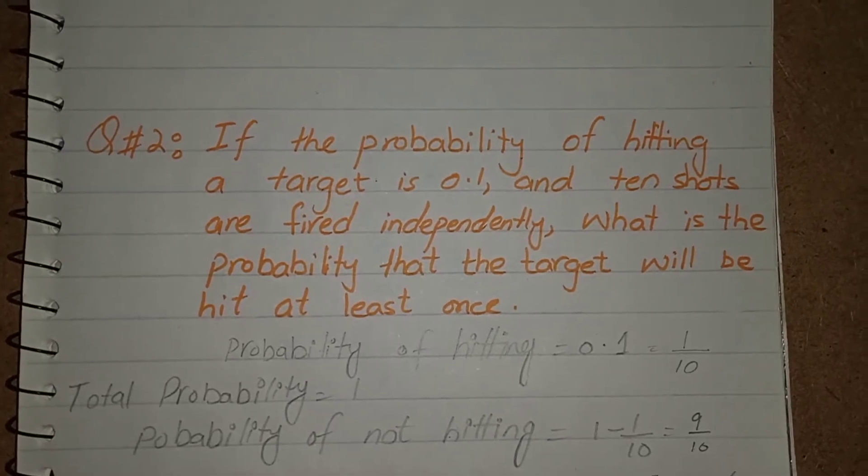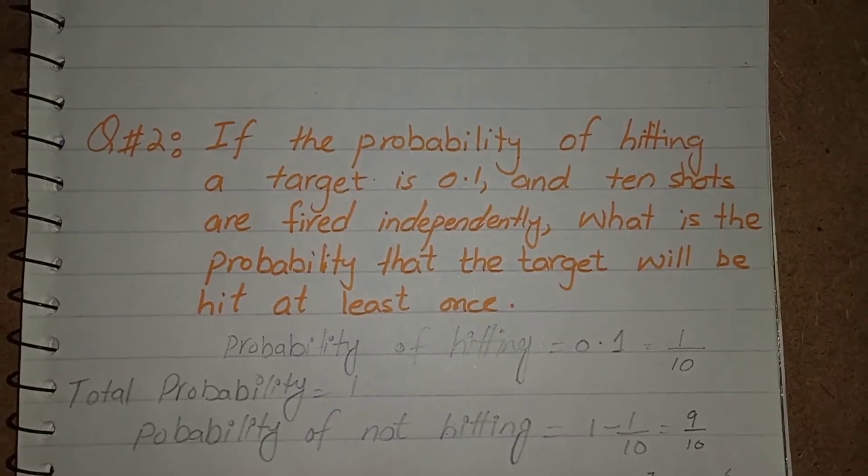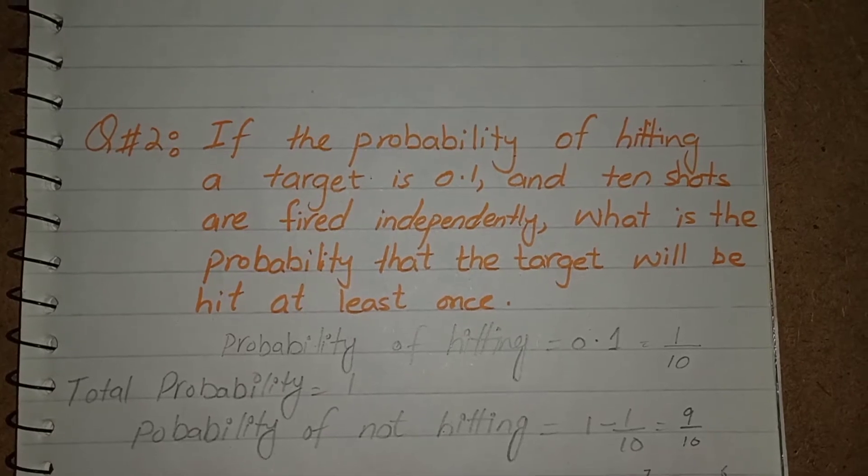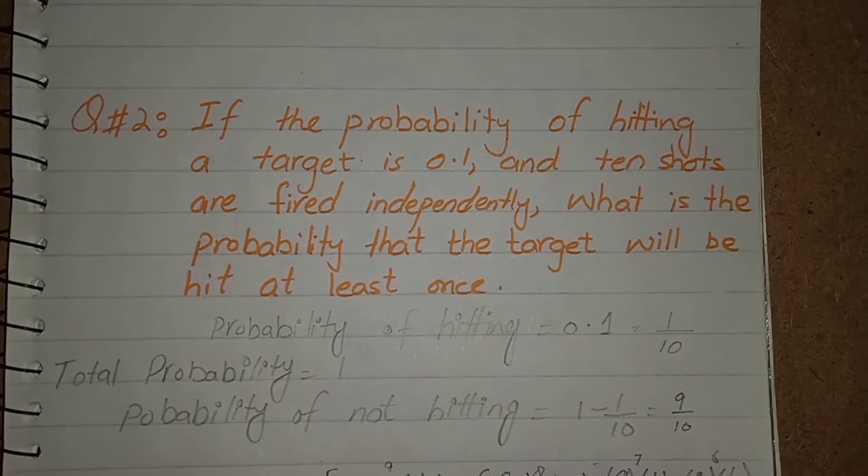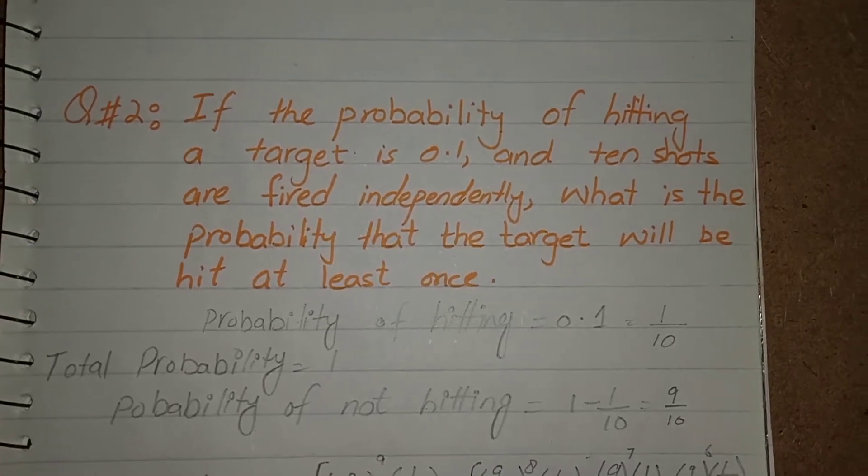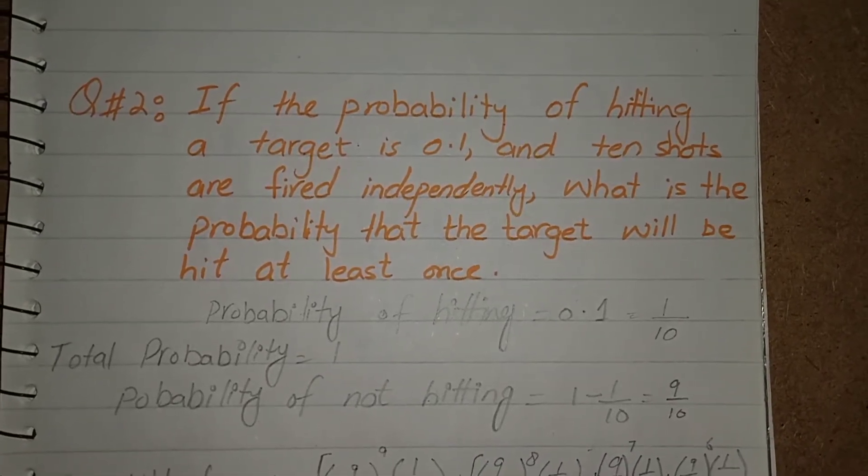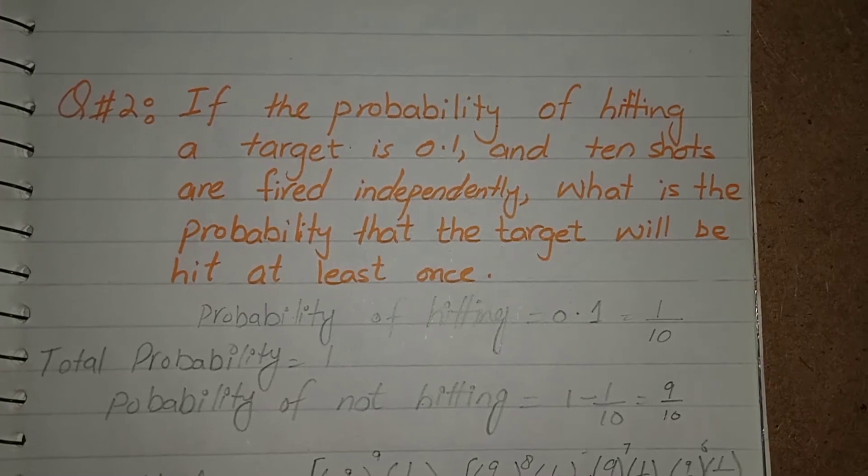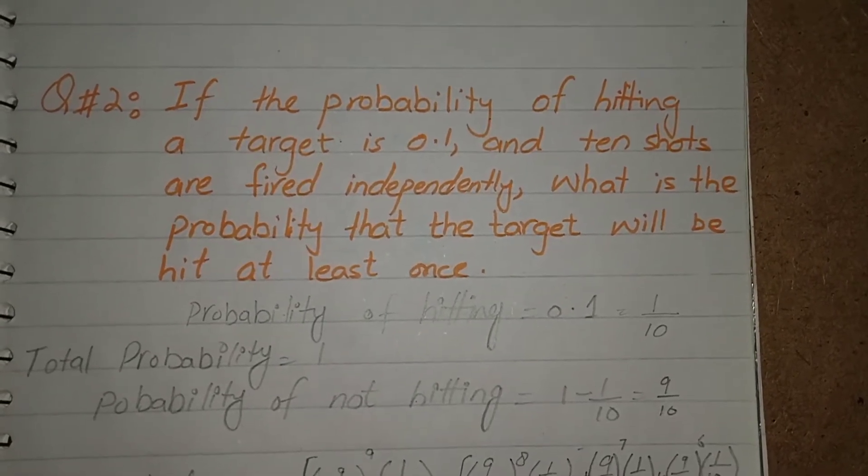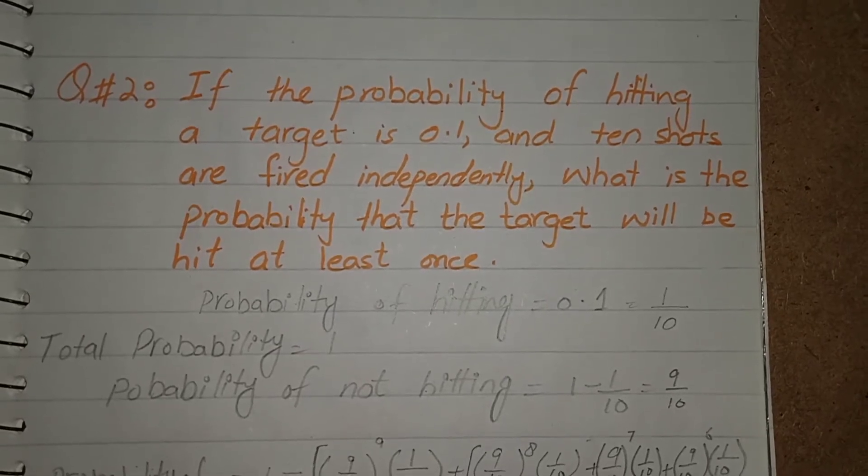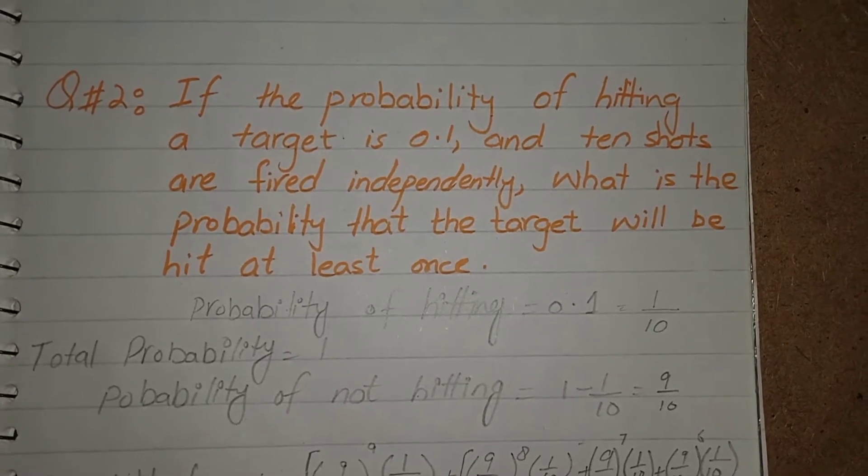If the probability of hitting a target is 0.1 and 10 shots are fired independently, what is the probability that the target will be hit at least once? I did this question in an opposite way because we have to find the probability of just one shot which actually hit. So I subtracted the probability of rest of 9 shots which didn't hit.